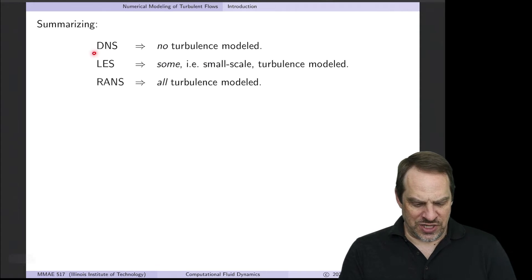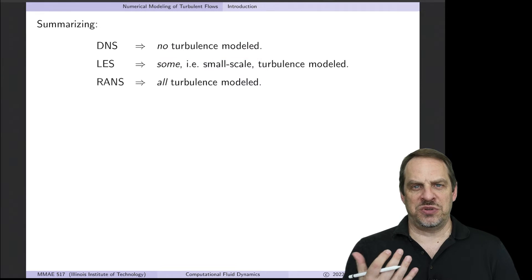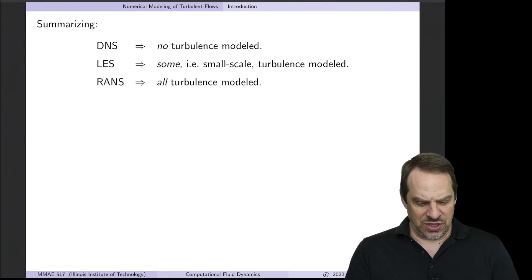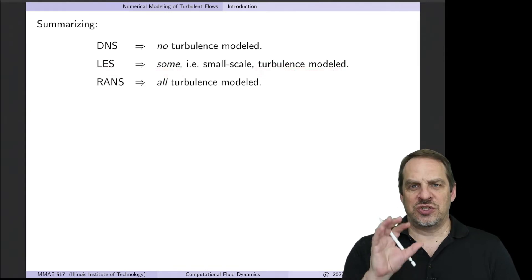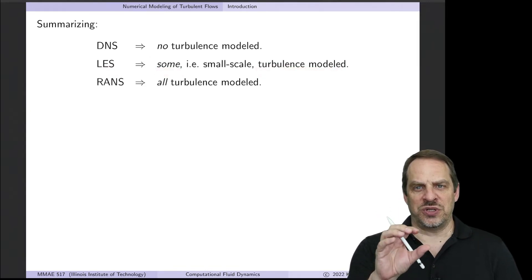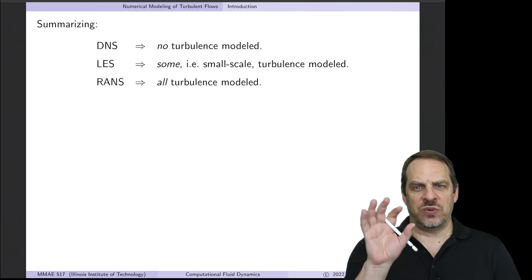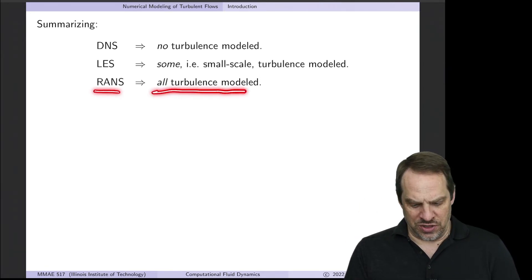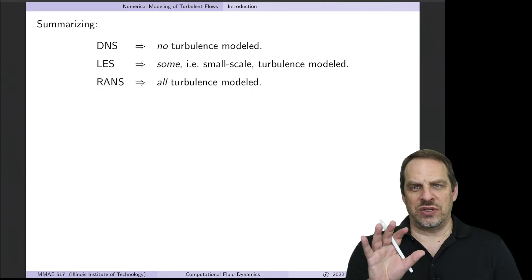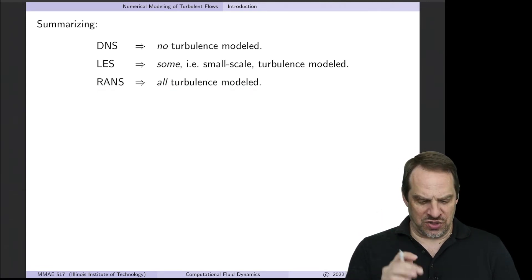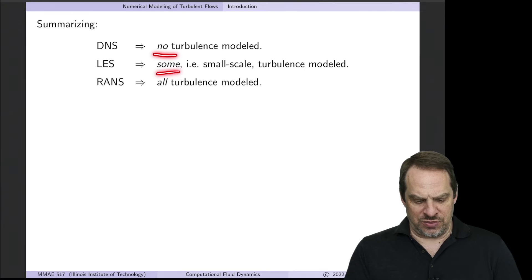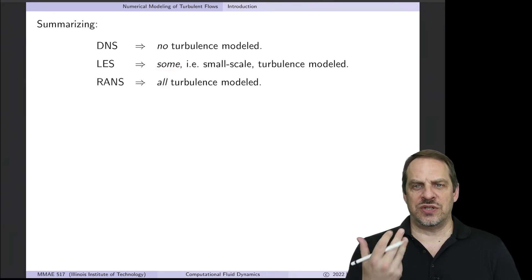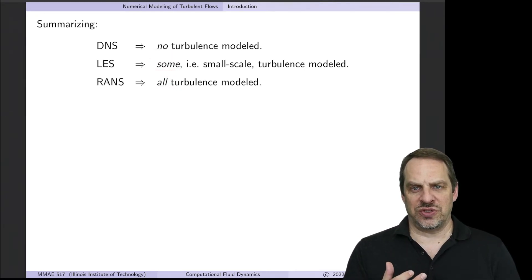So to summarize, for DNS, there is no turbulence being modeled. It's all being simulated directly, thus direct numerical simulation. LES, some of the turbulence is modeled, specifically the small-scale turbulence, which is relatively uniform from one flow to the next. And then in RANS, all of the turbulence is modeled. So we're only calculating the mean flow, the base flow. So no, some, and all turbulence. That's essentially the difference between these three approaches.